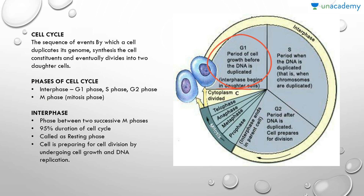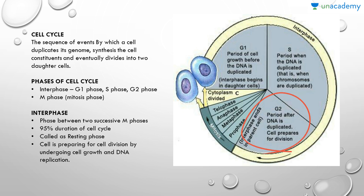During the S (Synthesis) phase, DNA synthesis and replication takes place. The amount of DNA will double — if the initial amount is denoted by 2C, it will increase to 4C. However, the number of chromosomes will remain the same in S phase. In G2 phase, protein synthesis occurs and cell growth continues. So cell growth is seen in both G1 and G2 phases, while DNA doubling occurs only in S phase.